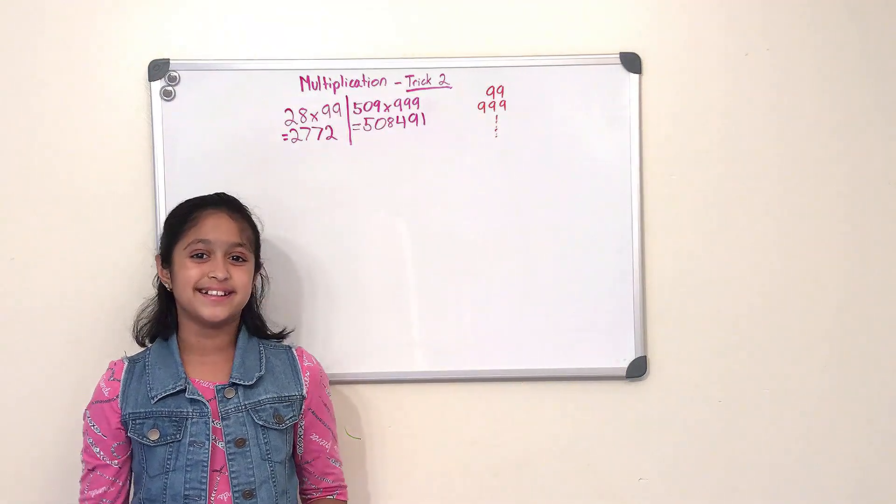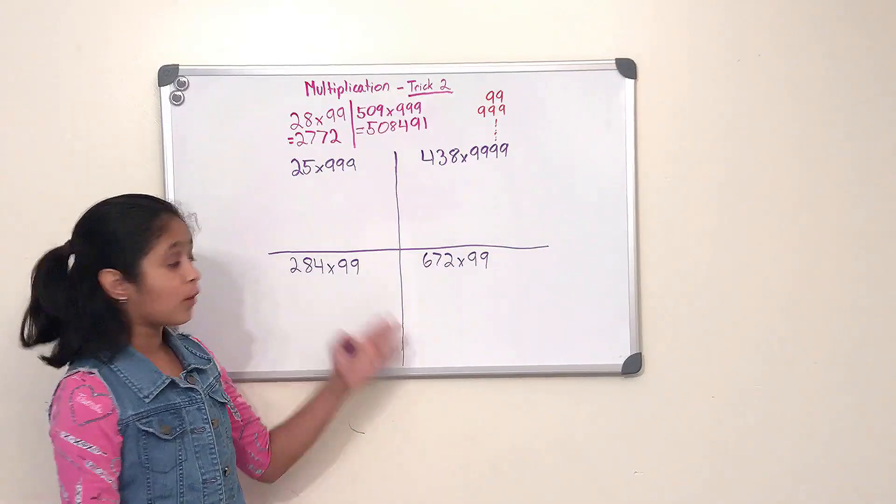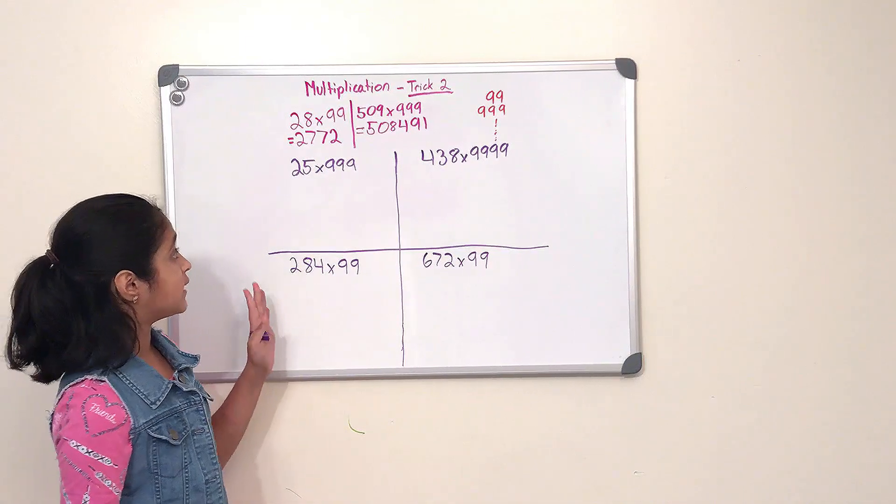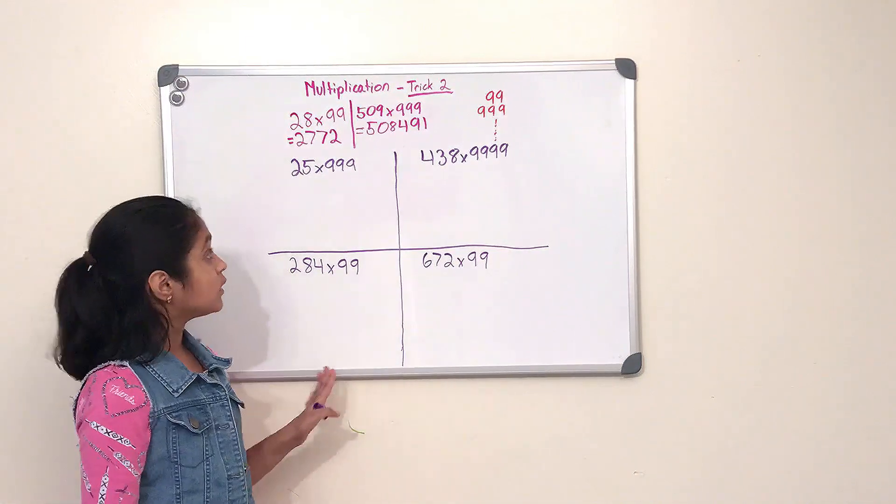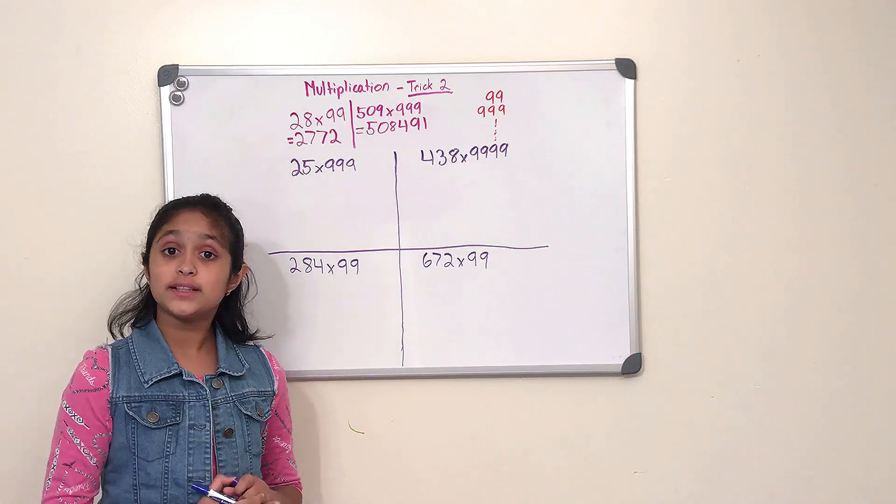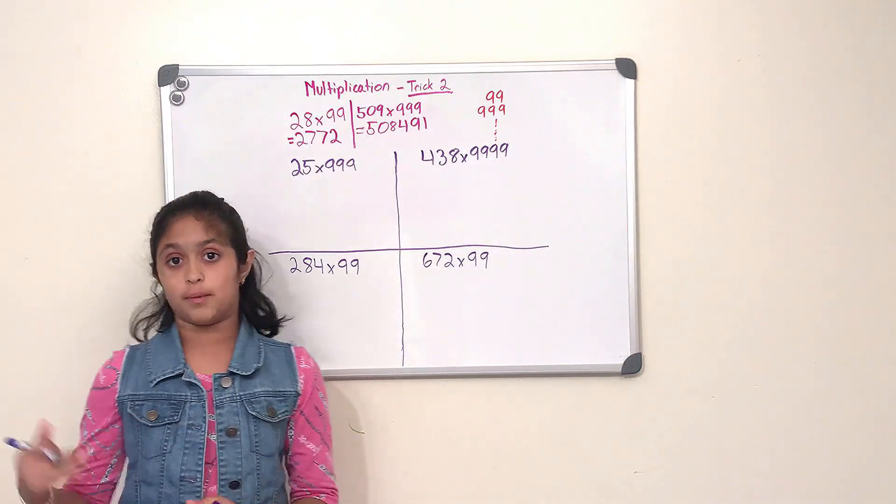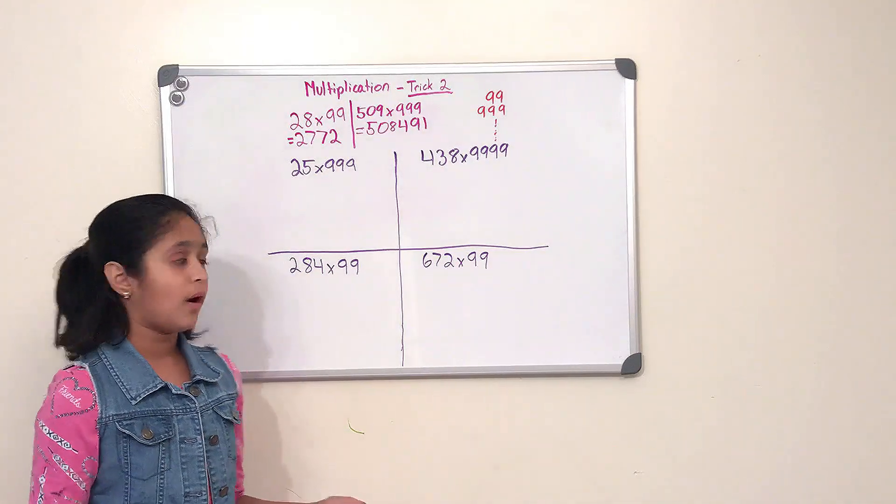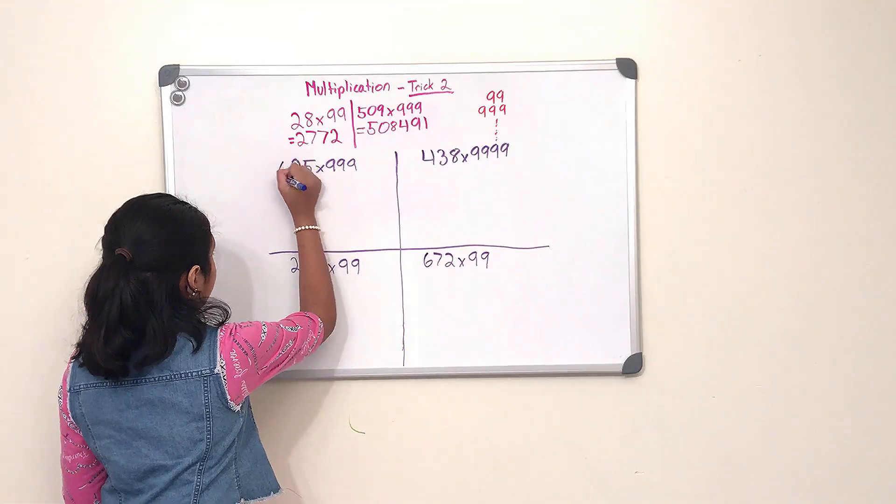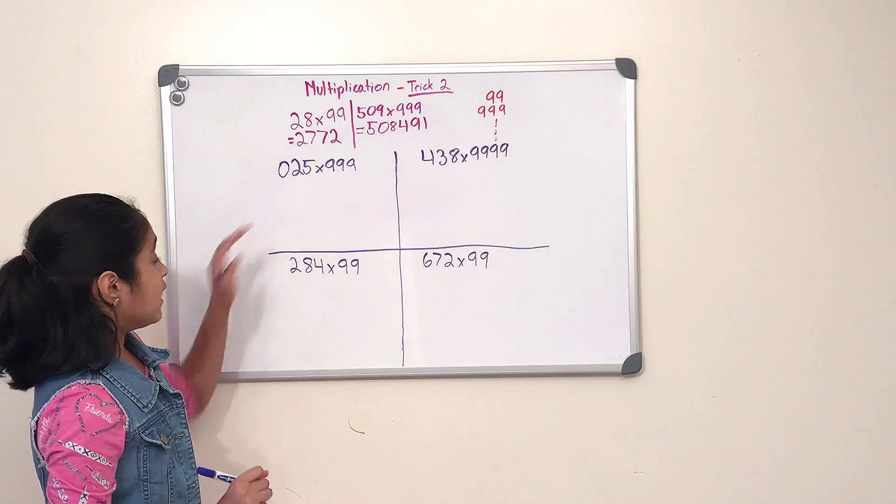So now we have four problems here, and our first one is to do 25 multiplied by triple nine. And our first step is we have to equalize the number of digits to the number of nines. So that's pretty simple, all we have to do is add a zero right in front of 25.